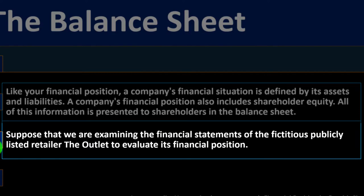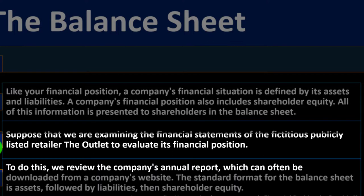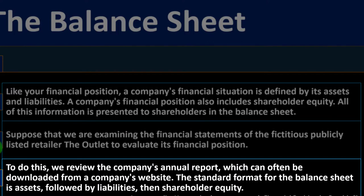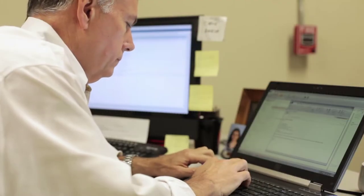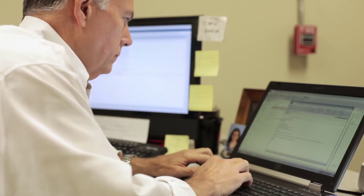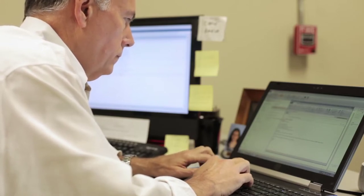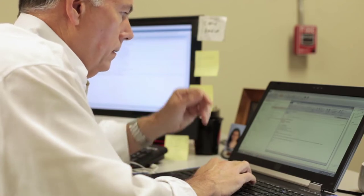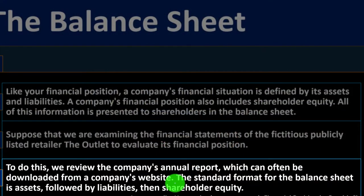Suppose we are examining the financial statements of the fictitious publicly traded retailer, The Outlet, to evaluate its financial position. We'd review the company's annual report, which can often be downloaded from a company's website. The standard format of the balance sheet is assets, followed by liabilities, and then shareholders' equity.